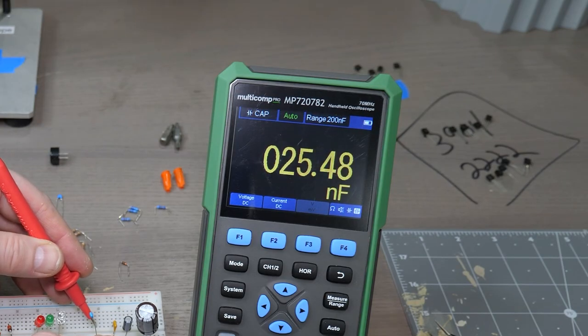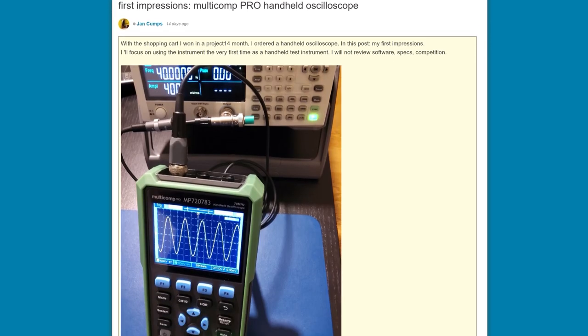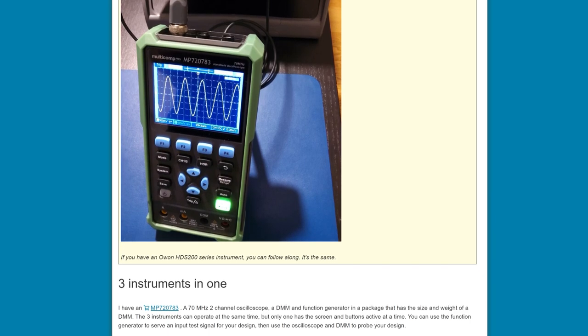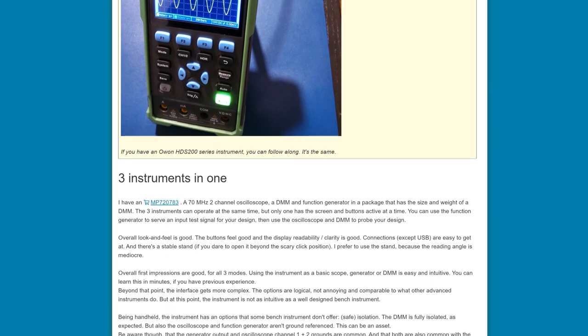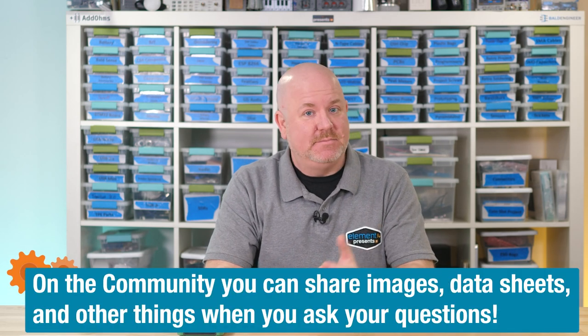Also, to backpedal on something else I have said before, I really like the color screen's readability for DMM measurements. Check the show notes for a link to a couple of blog posts on the Element 14 community for additional perspectives on this device. Remember, that is the best place to ask me electronics questions because I get notified, and then I can answer them, sometimes with pictures.